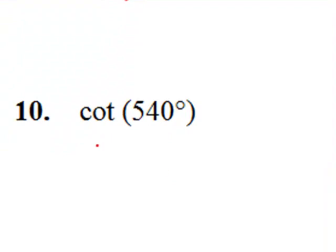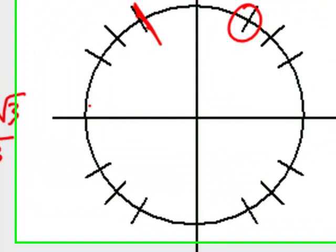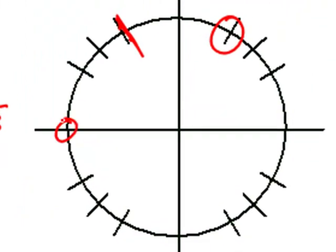540 degrees. Cotangent. Let's see. This, again, I must subtract 360 degrees. We get 180 degrees. That's in this location right here.